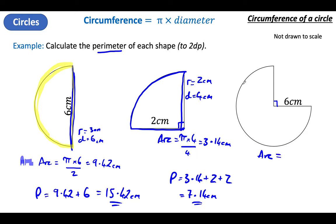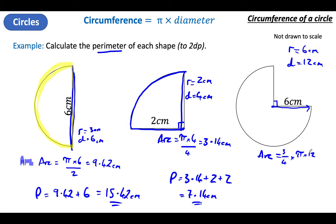I've got the perimeter of this shape — that's going to be made up of the arc and the two flat bits. R equals, D equals. That's clearly a radius — center to the outside is 6 centimeters. My diameter, which goes all the way across, will be double that, which is 12. How much of my circle have I got? Three quarters of it. So I've got to do three quarters of Pi times diameter — three quarters times Pi times 12 — which is 28.27 centimeters for the arc.